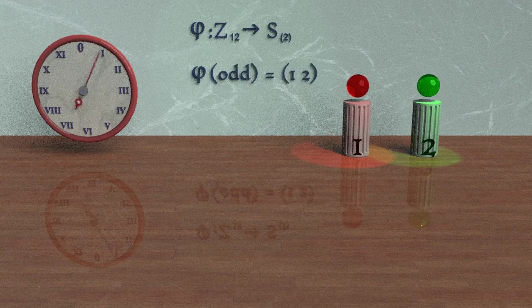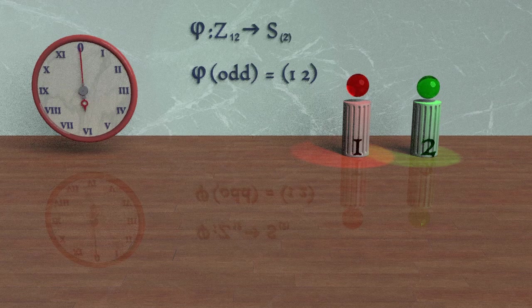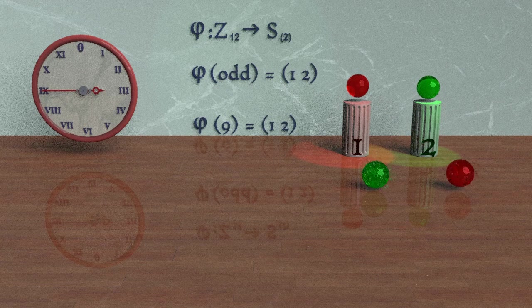Likewise, let's map all of the odd integers to the transposition element in S_2. For example, if we were to perform our function phi on the number 9, we would get the element (1 2).